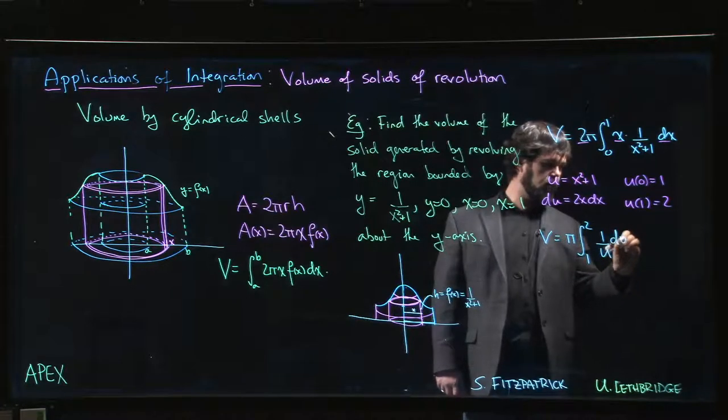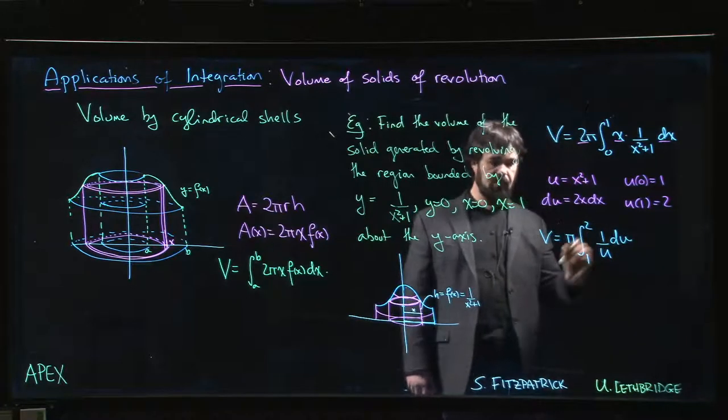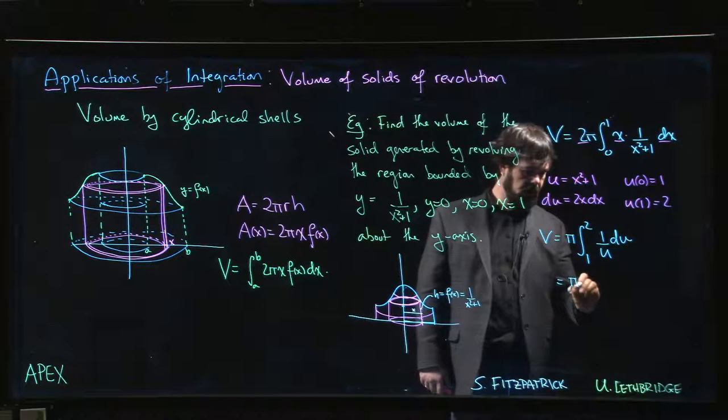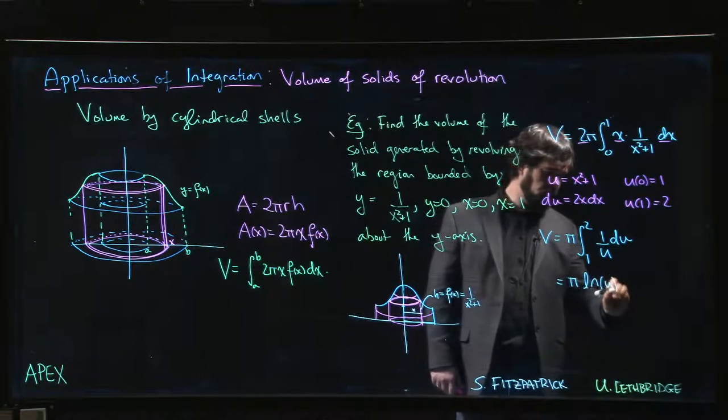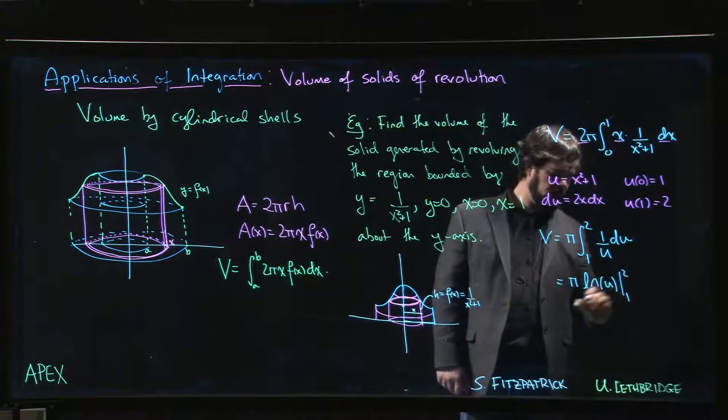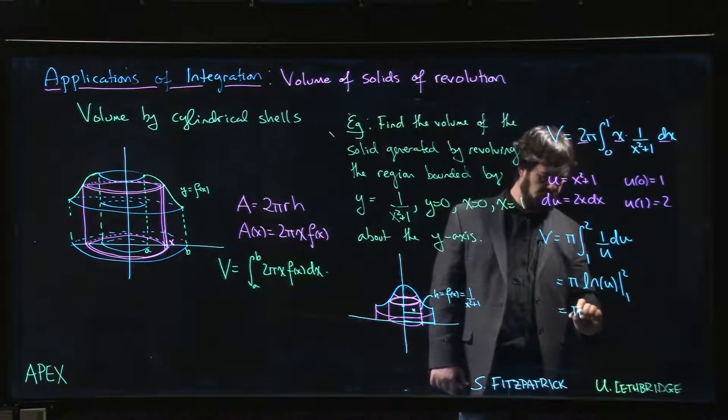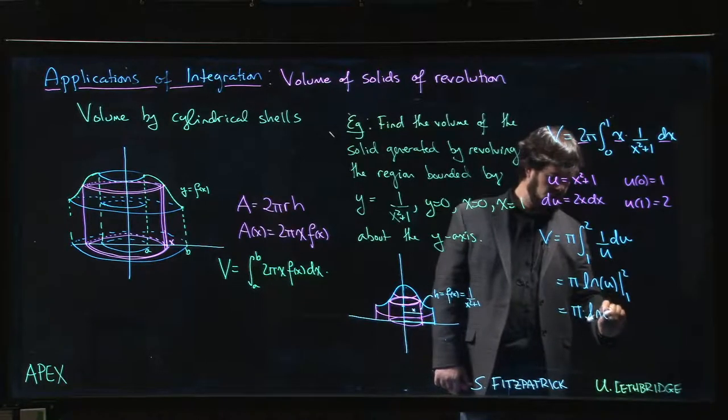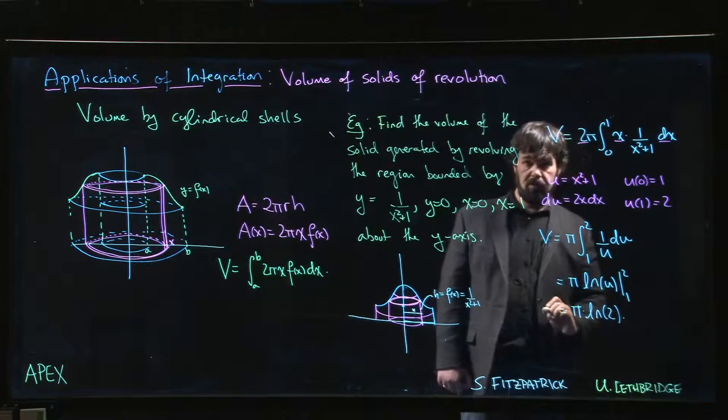Well, that's easy enough. This is pi times log u from 1 to 2, so it's pi times the natural log of 2.